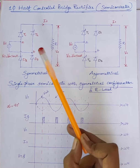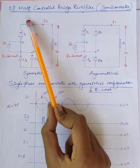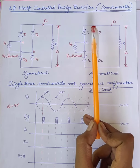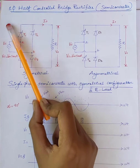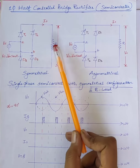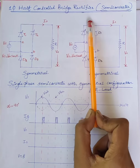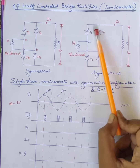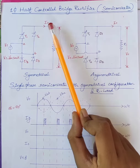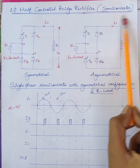Hello students. In the last classes we discussed single phase fully controlled bridge rectifier with different loads. Today's topic of discussion is single phase half controlled bridge rectifier with resistive load. In a half controlled bridge rectifier, one pair of SCRs is replaced by diodes. Single phase half controlled bridge rectifier is also known as a semi converter.